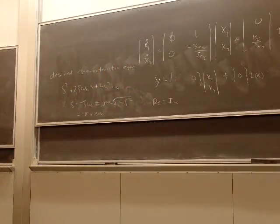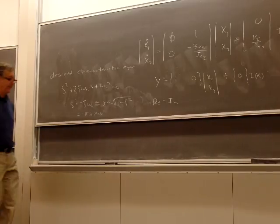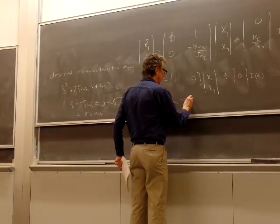What would zeta be? 0.707, 0.707. So you can prove that to yourself.